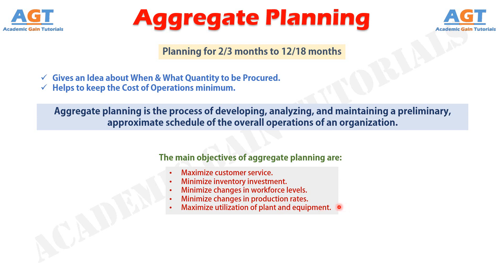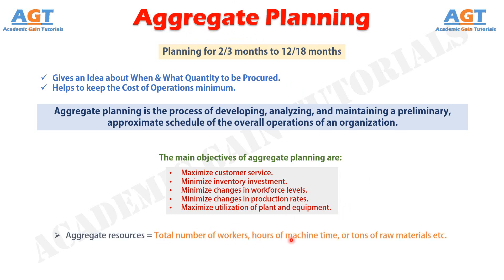In simple terms, aggregate planning is an attempt to balance capacity and demand in such a way that costs are minimized. The term aggregate is used because planning at this level includes all resources in the aggregate — for example, as a product line or family. Aggregate resources could be total number of workers, hours of machine time, or tons of raw materials.